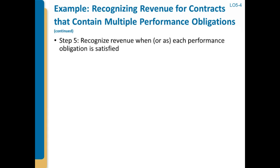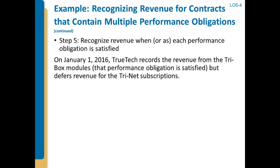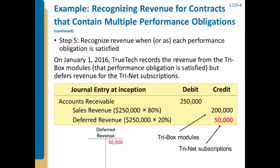Then what do we do? We really treat these things separately. We've got two different deals: the delivery of tri-box modules, with $200,000 associated with that, and the delivery of access to the tri-net over a year, with $50,000 associated with that. We'll book our receivable of $250,000 and recognize sales revenue immediately for delivery of the tri-box modules.